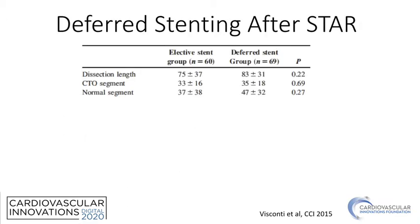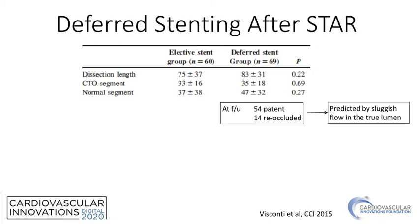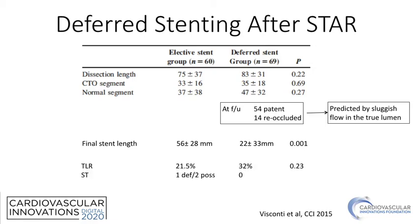What is the data behind it? This is the Italian experience published in 2015 — the original paper describing this technique. They compared immediate stenting following STAR with a deferred stenting strategy. In both groups, there was extensive sub-intimal dissection. When patients were brought back later, about 80% still had a patent vessel. Patency was predicted by good flow in the true lumen at the time of the original procedure. Patients had shorter stent lengths, and target lesion revascularization rates were similar. Stent thrombosis occurred more frequently in the elective stenting strategy, although this is a retrospective and very small study.